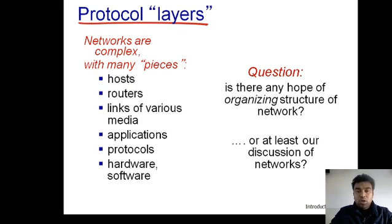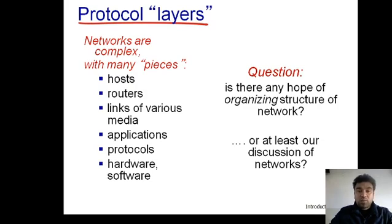The same case applies when we talk about computers or end devices from different hardware and software platforms. How are they going to communicate with each other? They all need to have a common platform. That common platform is called the OSI model, which stands for Open Systems Interconnection, and this model is given by ISO — the International Standard Organization. This organization provides this common platform in the form of a layered architecture with seven layers.